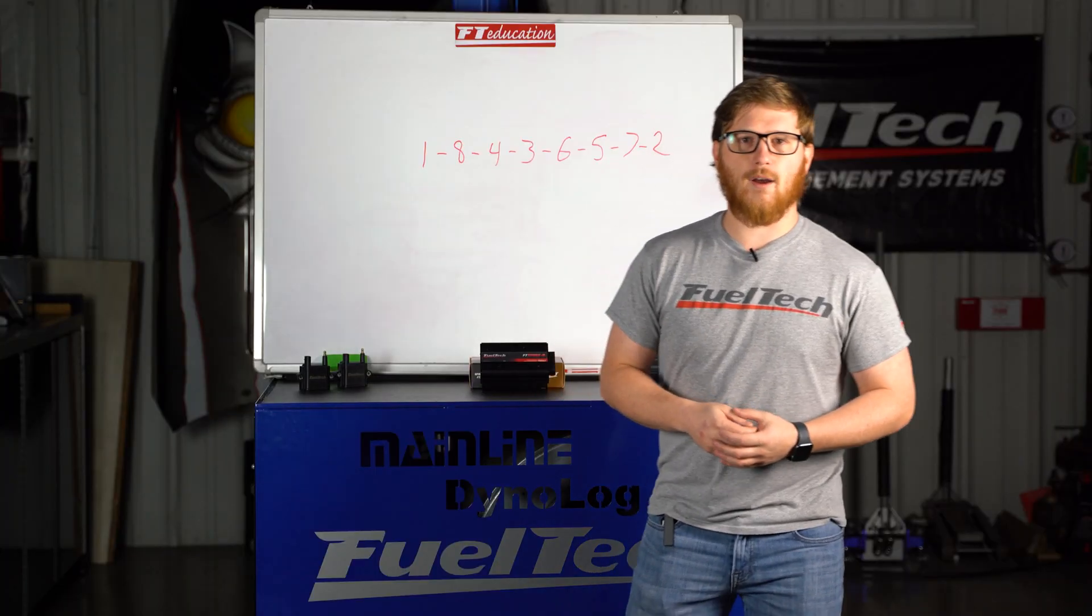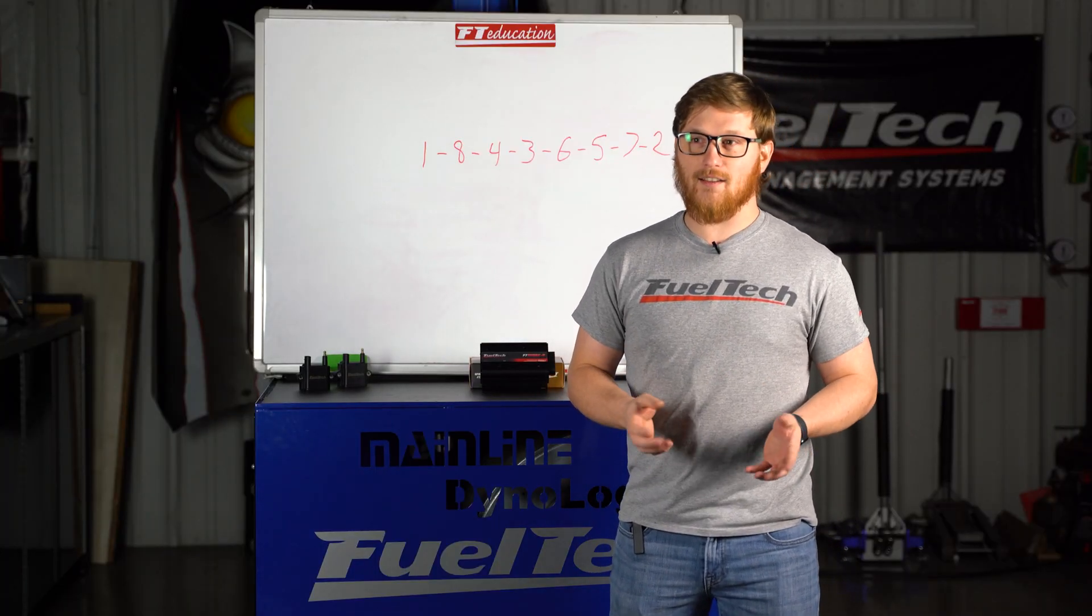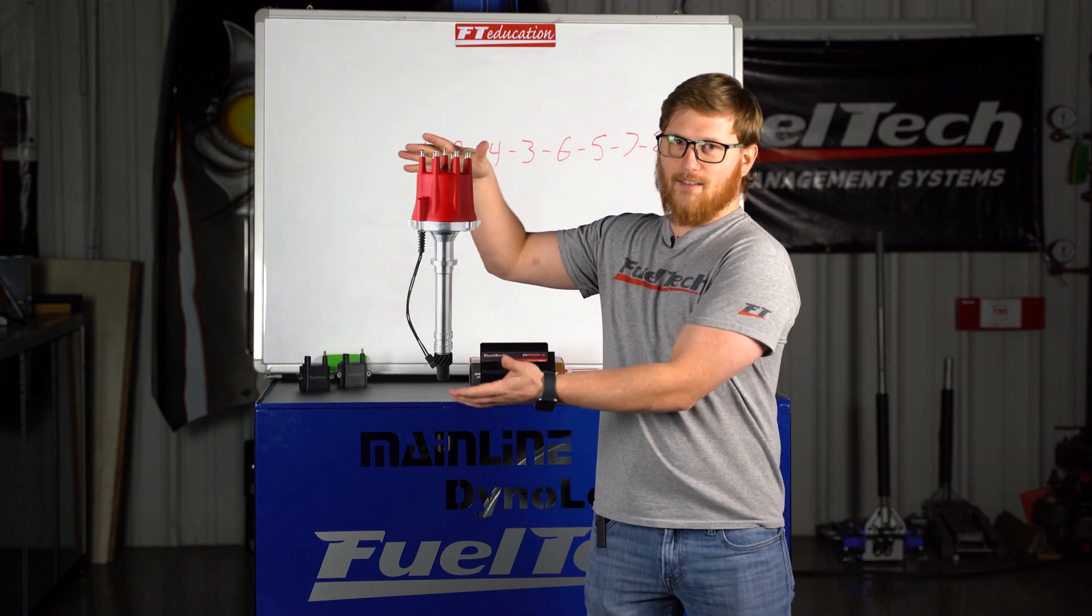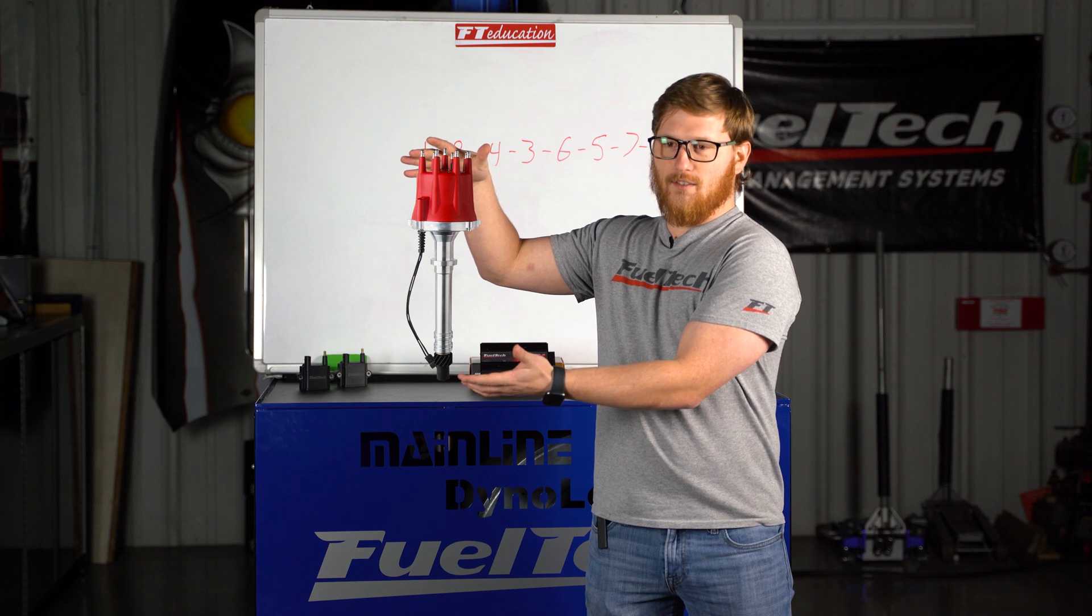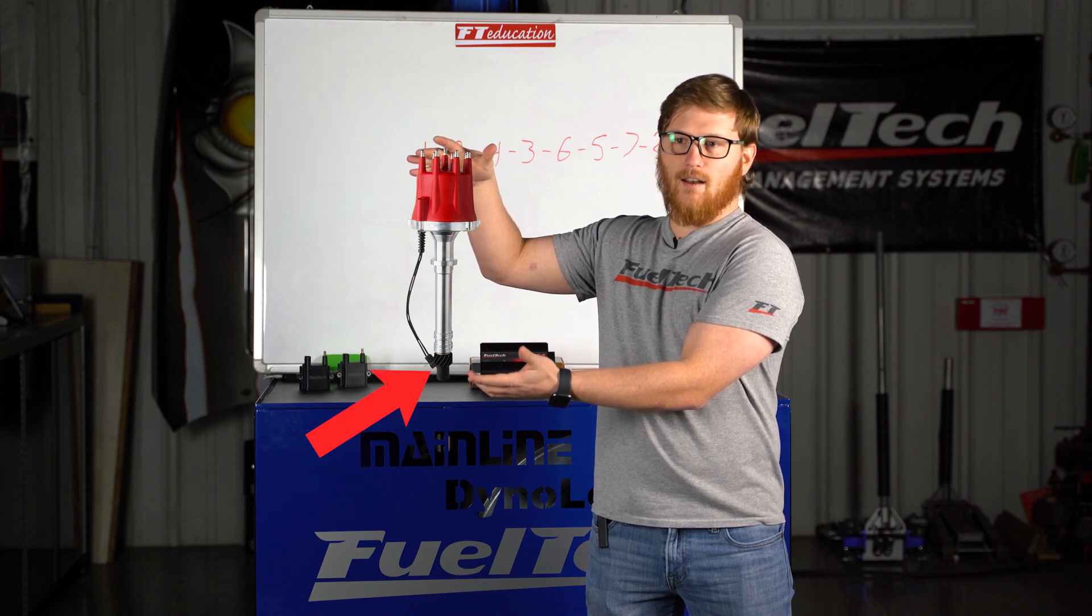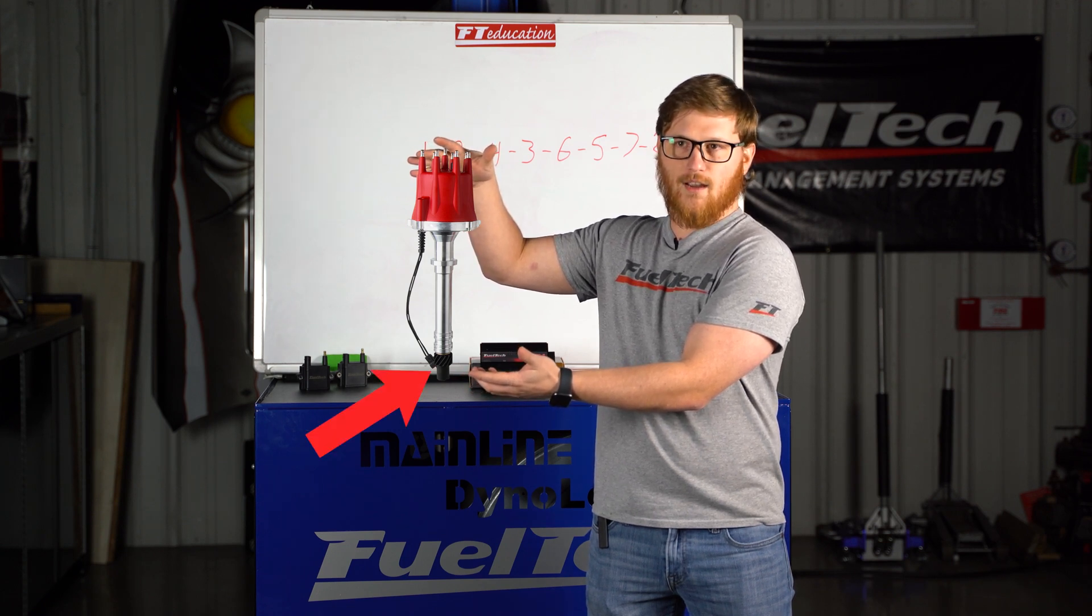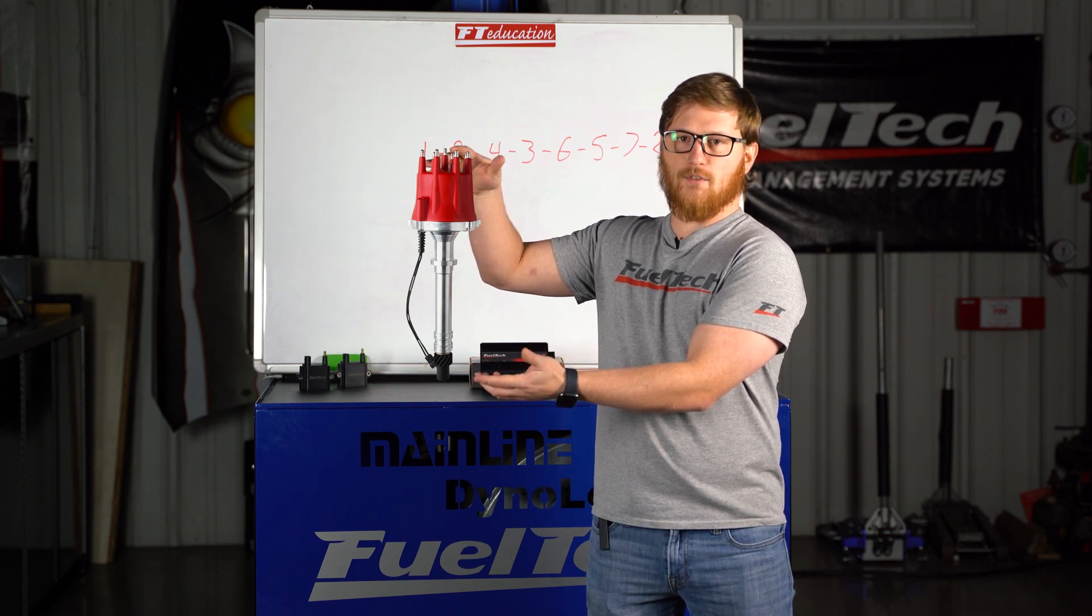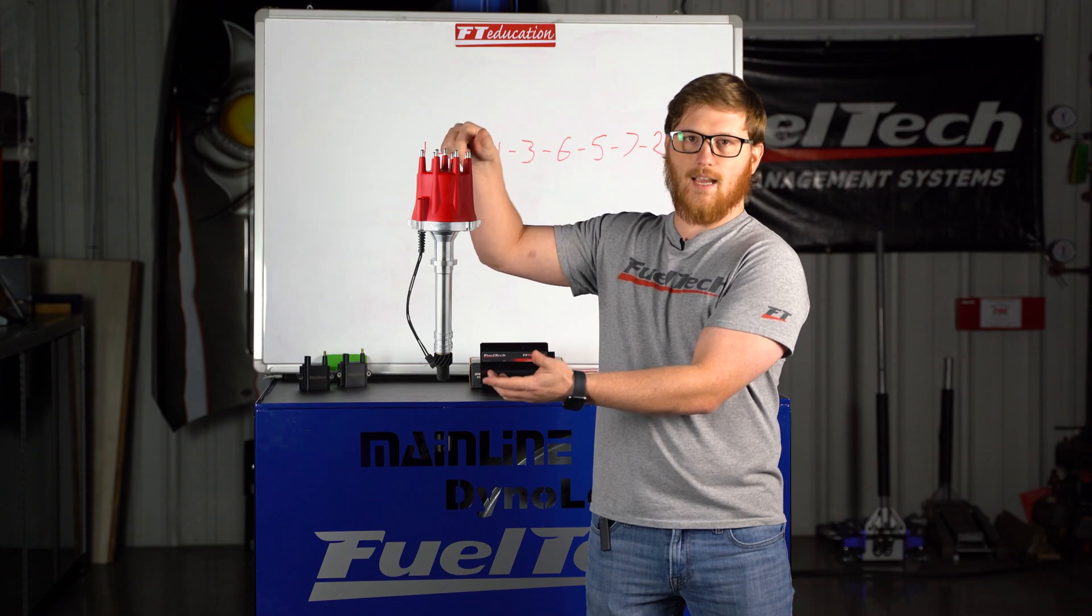So first we're going to talk about a distributor, which I don't have one of these, but my media guys are going to make one appear right here like magic. And this is a distributor. What it uses is a gear at the bottom and it's spun usually by the camshaft, and inside of it has a rotor button that spins around and distributes the spark to different points on the top of it.